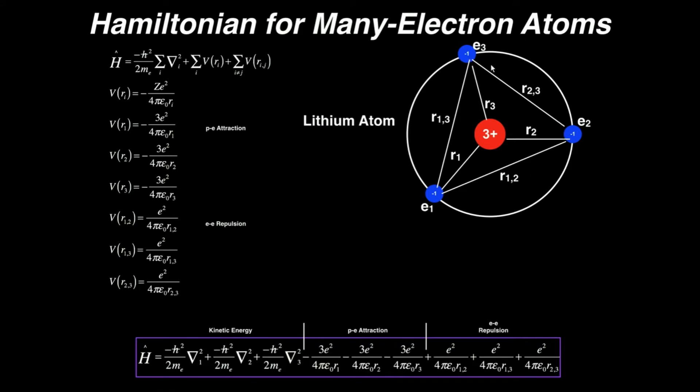All the various distances are denoted here. When you deal with determining the Hamiltonian for multi-electron atoms, drawing a free body diagram can be very, very beneficial.